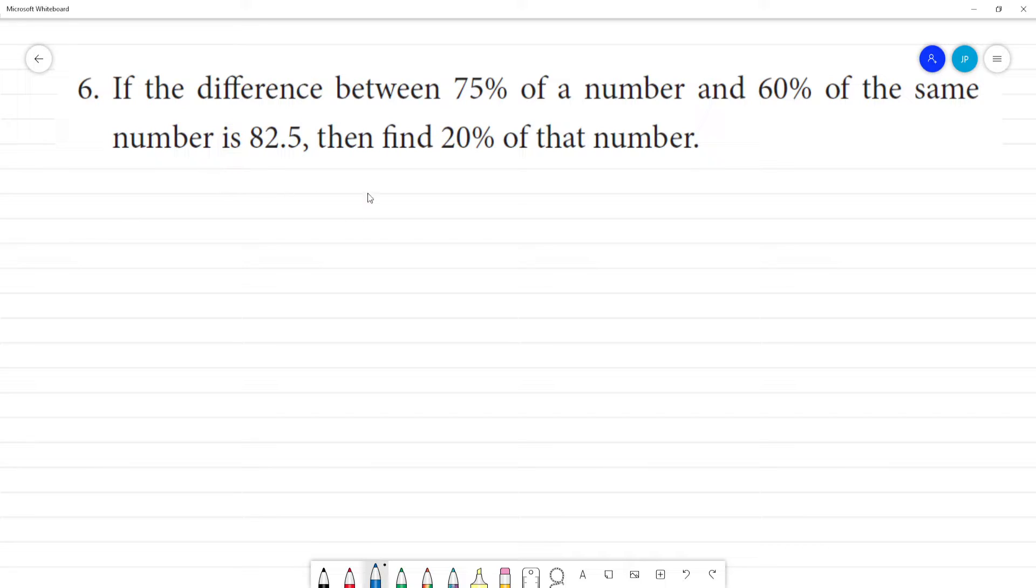Let's take the number as x. 75% of the number is 75% of x, which equals 75 by 100 into x.